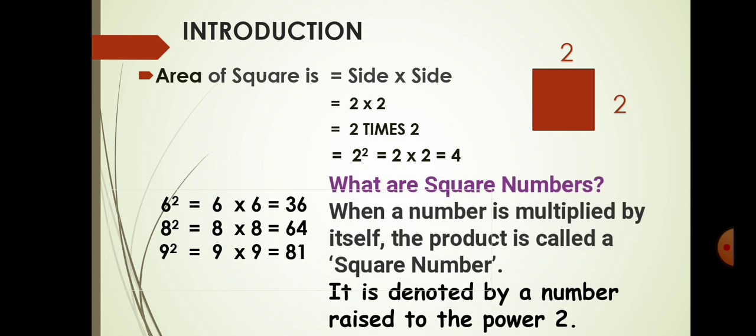So we can say: what are square numbers? When a number is multiplied by itself, the product is called a square number. It is denoted by the number raised to the power 2. We have already learned this with the chapter on powers and exponents — the same concept applies here, where the power is 2, meaning any number is multiplied twice.